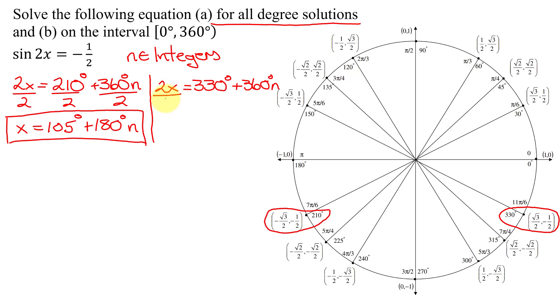And the other part, I'm going to divide this equation, all three parts by 2. So I'm going to get x equals 330 divided by 2 is 165 degrees, plus 180 n. So there are all the degree solutions to this equation here.